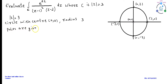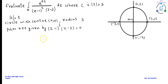In this question, poles are given by (Z-1) whole squared into (Z-2) equal to 0. To solve this question, we have to check whether the poles Z equal to 1 and Z equal to 2 lie inside or outside the circle mod Z equal to 3.